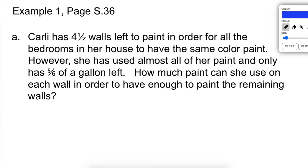But we're going to show how we can do this one using our strategies of multiplying by the reciprocal. So first thing we need to do is we need to take this. First of all, let's set up our problem. This is how many walls she has left to paint. This is how much total paint she has. So our division problem is five-sixths divided by four and one-half.